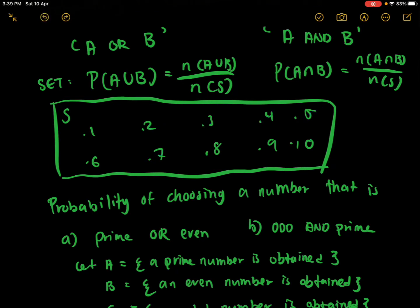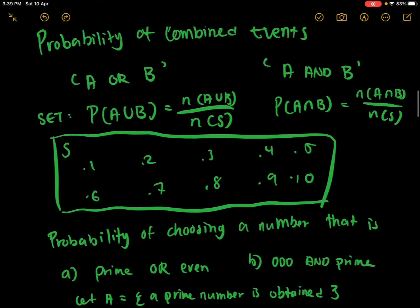Remember, in this case number 2 is both prime and even, so you do not want to count it twice — you only want to count it once. That's why it's better to use set form, because it will let you avoid counting it twice.